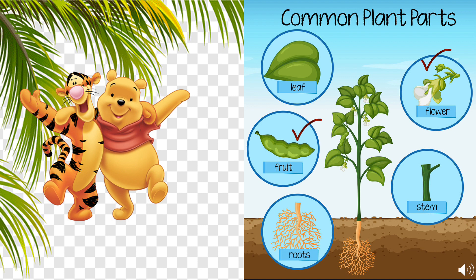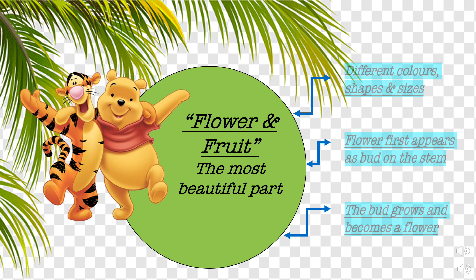Children, in this picture we can clearly see the root system and shoot system of a plant. Root system is the first part of a plant that grows from the seed. And shoot system is the part of the plant which is above the ground, and it includes leaves, fruits, flowers and stem.